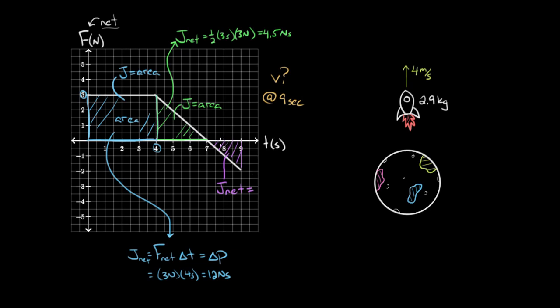So how much negative net impulse? We still find the area. So the area of a triangle, again, is gonna be one half. The base this time is two seconds. And the height is negative two. So negative two newtons, which gives us a net impulse of negative two newton seconds.